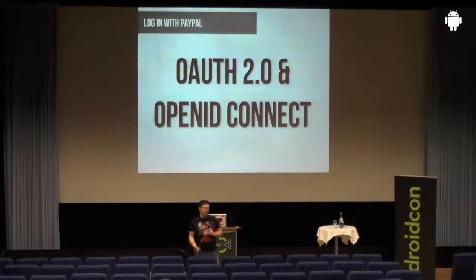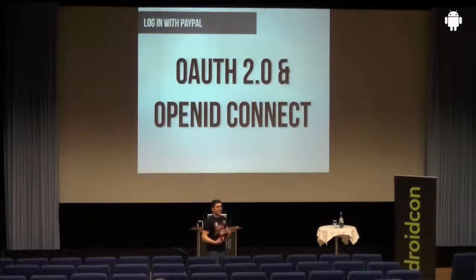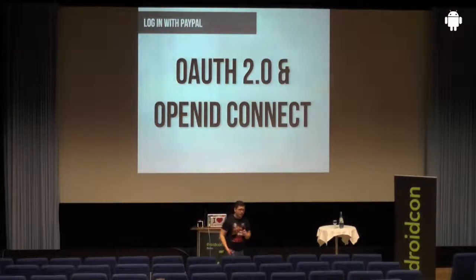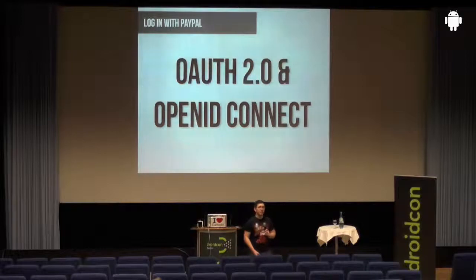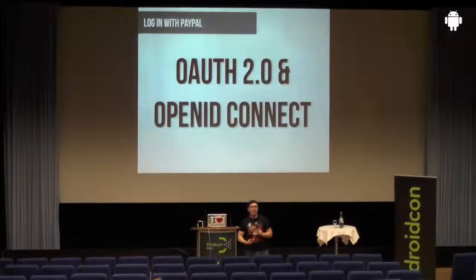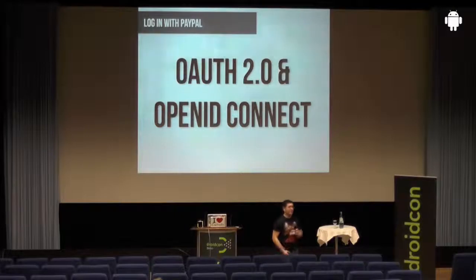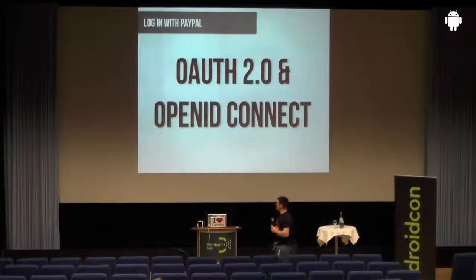OpenID Connect uses OAuth2 for authentication and gives you an API-like way to access resources. You get session management so you can do a valid logout. For example, trying to logout from Twitter with an app means revoking your token and removing the application. But sometimes you don't want to remove the whole application — you just want to end your current session. That's not really possible with OAuth2 alone since you have to delete your whole token, and that's one of the things OpenID Connect provides.